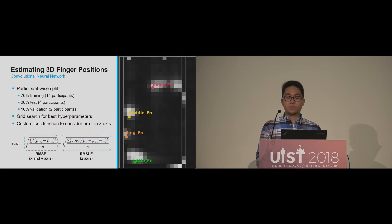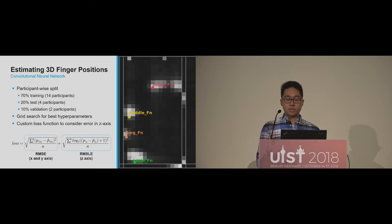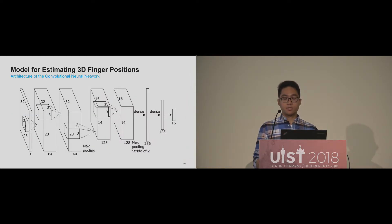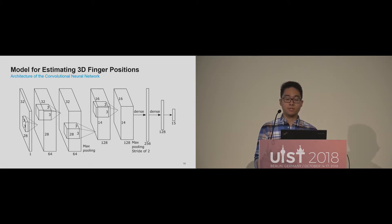In terms of optimization, we developed our own loss function to consider the error in the axis perpendicular to the touch screen. Because the touch screen cannot track movements above or below it, we lowered the weight of the z-axis in the loss function, since a less accurate estimation can be compensated by checking blob availability in the capacitive image at runtime. We use the traditional root-mean-squared error for the x and y-axes, and a root-mean-squared logarithmic error for the z-axis. Our CNN architecture consists of four convolution layers and two fully connected layers with 256 and 128 neurons each. The input is a 28×32 capacitive image, and the output consists of 15 neurons representing the x, y, and z coordinates of all five fingers.